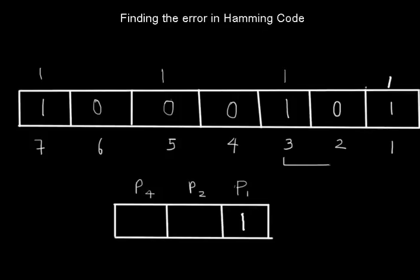So now let's check for block number 2. For block number 2, we have to check 2, 3, leave out 4, 5, and 6, 7. So in this block, there is a 1 at 3 and there is a 1 at 7, so it is in even parity, so there is no error. If there is no error, put in 0 corresponding to P2.